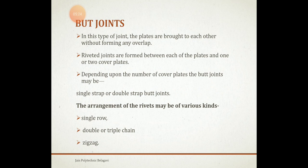The difference between a lap joint and a butt joint is that in a butt joint, the plates are brought up against each other without forming any overlap — that is, overlap does not exist. In butt joints, cover plates are used: one or two cover plates are placed on each side of the plates being joined. Butt joints are further classified as single row, double row, zigzag, etc.